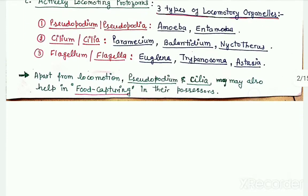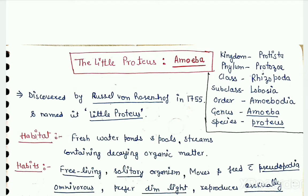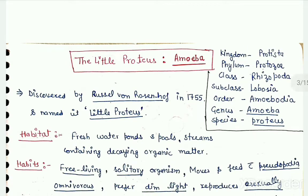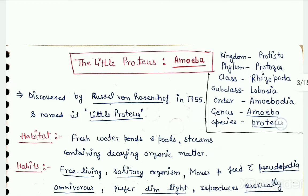First let us know a little about amoeba, which is a freshwater microscopic organism belonging to the kingdom Protista and the phylum Protozoa. The species of amoeba which will be our reference species during this topic is Proteus.